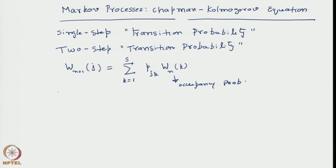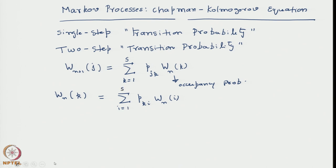We can go back by one step — replace n with n−1 — so the nth-step probability W(n,k) of being in state k similarly came from the (n−1)th step probability distribution via transition probabilities from i to k, summed over all states i. This is made possible because the transition probabilities do not depend on the number of steps, and the process is Markovian.